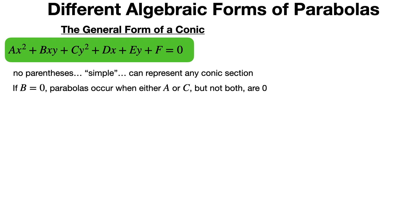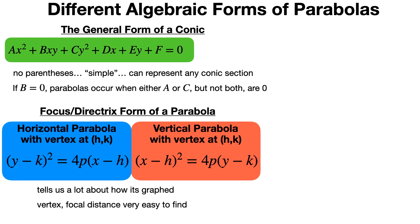The first is the general form of a conic. This can represent any conic section. It has no parentheses in it. It's rather simple looking, but if b equals zero — in other words if the xy term is zero — then when a or c but not both are equal to zero, that's going to be a parabola. The focus-directrix form, which we've spent most of our time dealing with, has something squared equal to 4p times the other variable, displaced by h and k. The vertex of these appears at h and k.